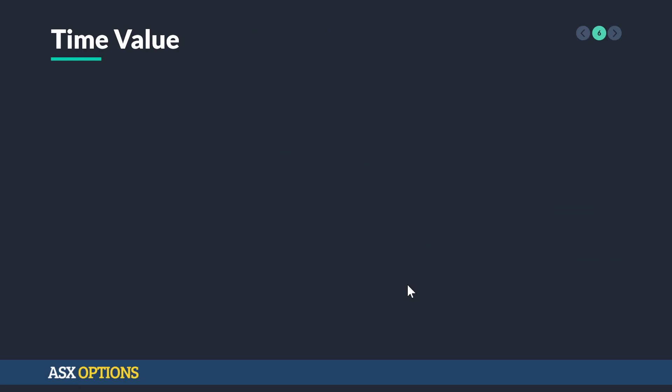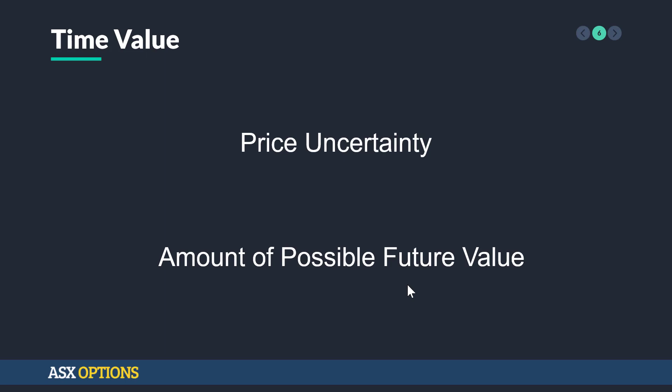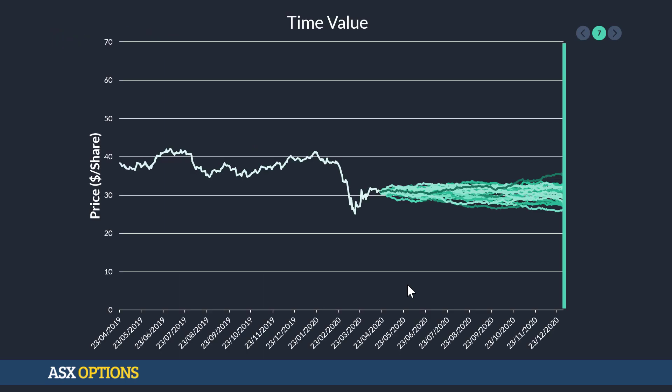Now moving on to time value. This is the price uncertainty — the amount of possible future value that you could get out of the option. This is one where you just need to see a graphical representation to get your head around it. The time value is, in other words, the amount of dispersion that you could possibly have of that price moving forward into the future.